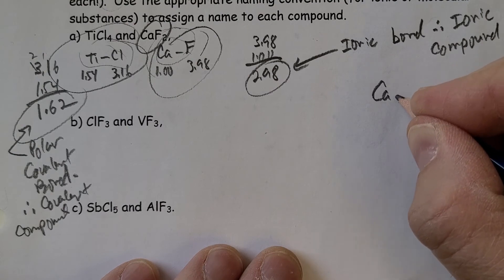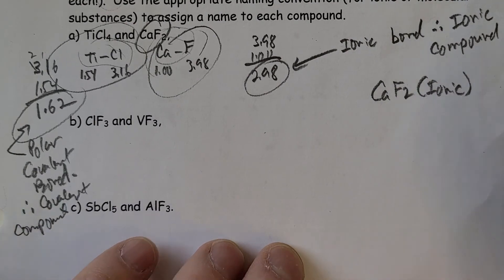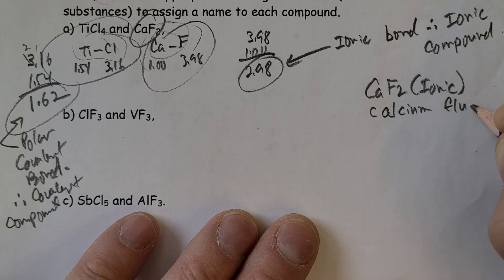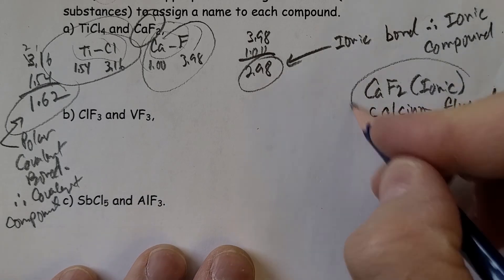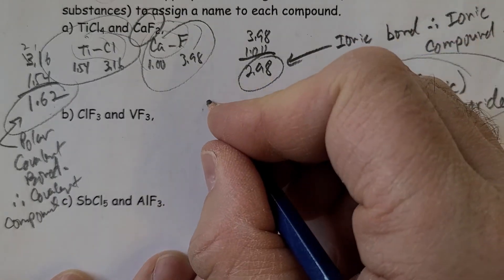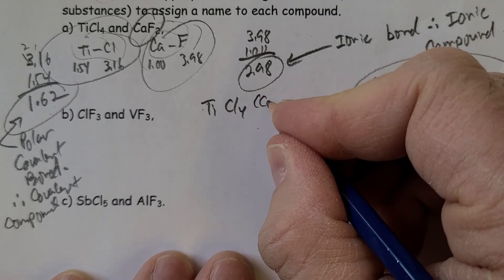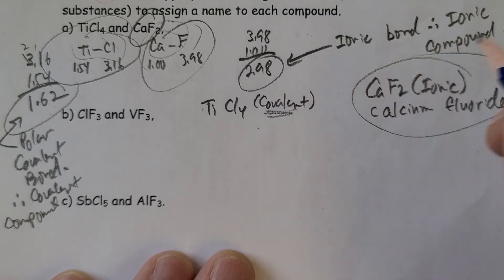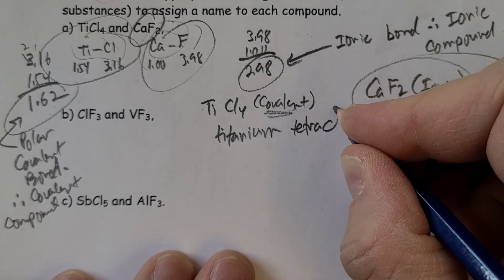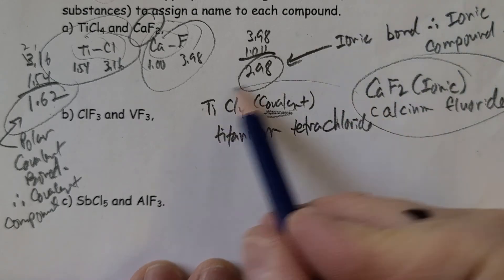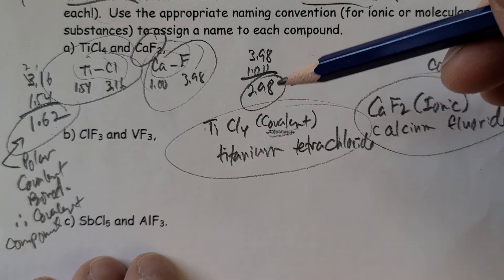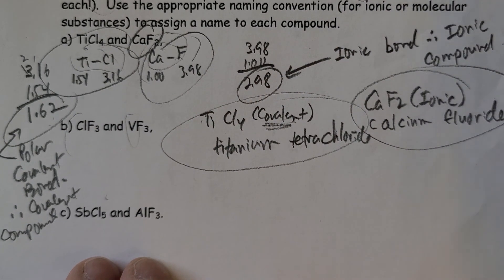So CaF₂ is ionic, and when naming it we simply say calcium fluoride. For TiCl₄, since it's covalent, we use prefixes: titanium tetrachloride. There will always be one ionic and one molecular compound in each pair. Look these up on the table and you should be able to finish this assignment no problem.